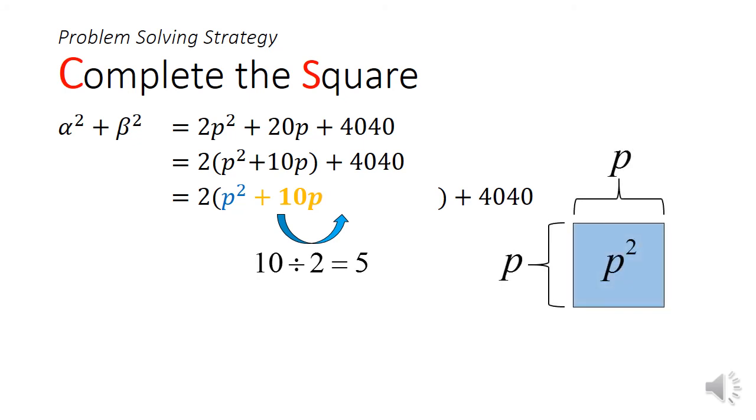We do this because if you can picture an incomplete square made of a blue square p by p of area p square and two orange squares that are 5 by p with area 5p, this incomplete square would require a red square of area 5 square to complete it. This would form a square of dimensions p plus 5 by p plus 5.